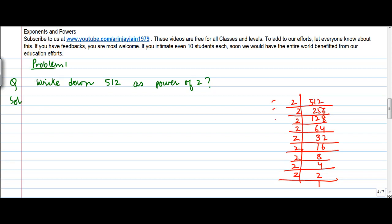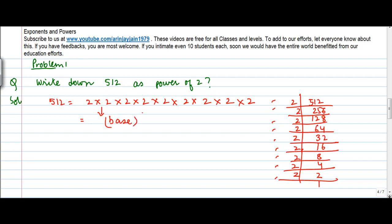How many 2s do you have? 1, 2, 3, 4, 5, 6, 7, 8, 9. So 512 is equal to 2 multiplied 9 times. What do I do in such a case? I need to express this as base to the power exponent. The base is the number of which the power has to be expressed, so base is 2, and the exponent is the number of times this number gets multiplied — so 512 is equal to 2 to the power 9.